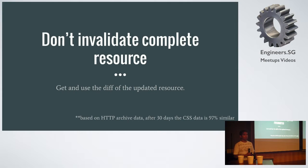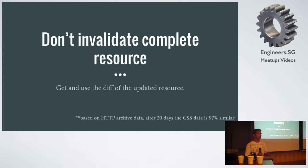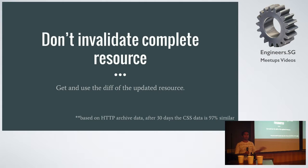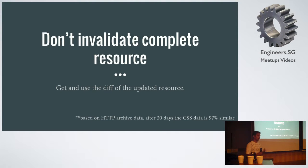Next: don't invalidate the complete resource. You can cache your static resources — for example, the entire CSS — but when your CSS gets updated, you might want to get only the newly added CSS. Based on HTTP archive data, almost 97% of CSS files that are loaded are the same as the previous version and just 3% has changed. So why load the entire 100%? Using a plugin or some code in your service worker, you can get the diff of a particular static resource and use just that, instead of downloading the entire file.